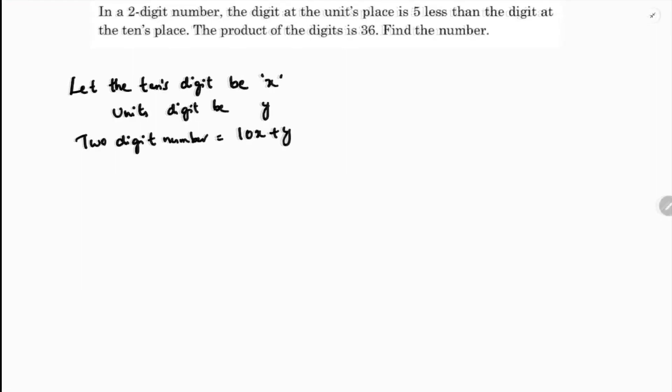In a two-digit number, the digit at units place is 5 less than the digit at tens place. So y equals x minus 5.